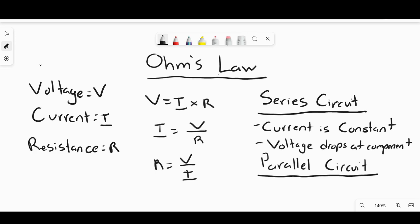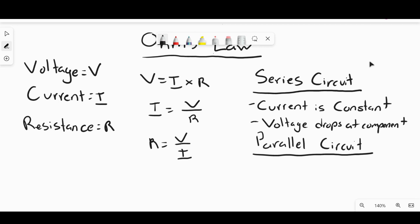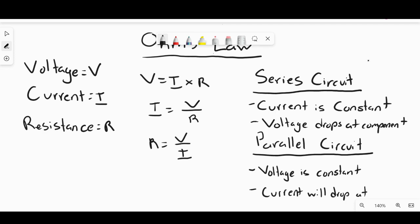In a parallel circuit, it's the opposite. Voltage is constant across all of the different branches. For example, if I had a parallel circuit with three resistors in three parallel branches, the voltage is going to be the same across those three branches, but the current is going to change across those three resistors.